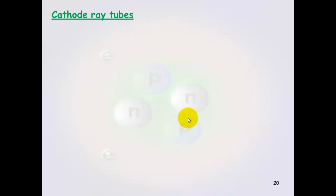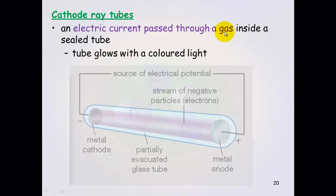The way he did his experiments was like this. He used a cathode ray tube. Now a cathode ray tube has an electric current passed through a gas inside a sealed tube and the tube glows with a colored light. So this is your cathode ray here. You have electricity running around the outside. And you have a stream of negative particles, which are electrons, running through it. But they didn't know that they were electrons back then.